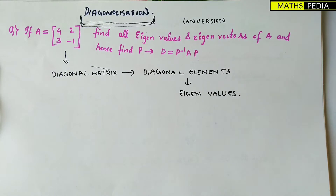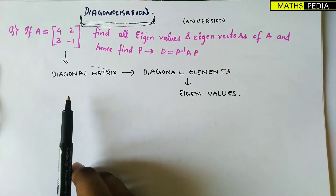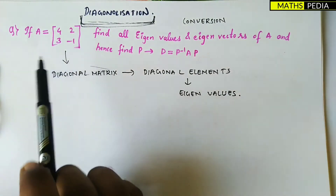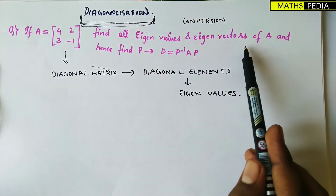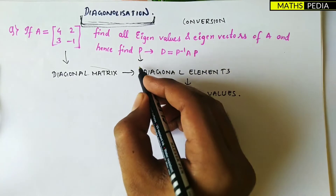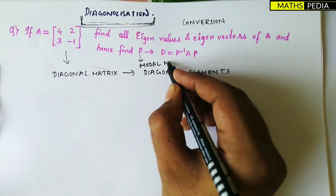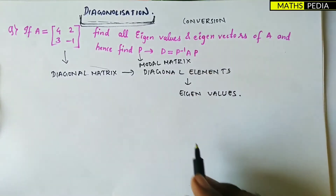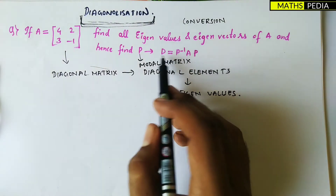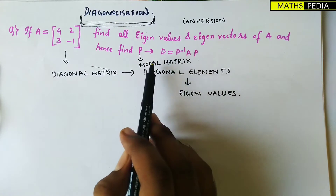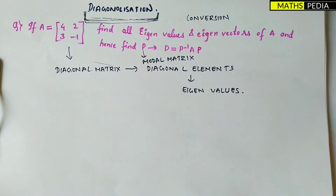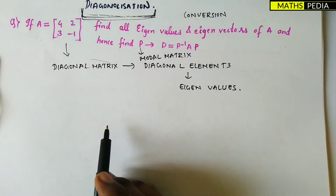We'll understand the working rule of how to find the diagonal matrix for a 2×2 matrix. The question is: given matrix A, find all eigenvalues and eigenvectors, and hence find P, which is the modal matrix. Then D, the diagonal matrix, equals P inverse times A times P.